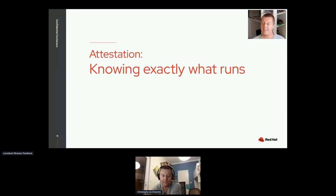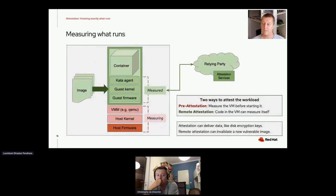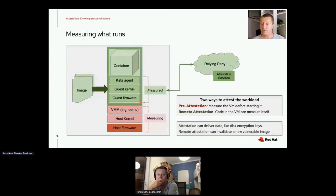Let's talk about attestation — the process that lets the owner, the tenant, know that what is running inside the guest is exactly what is intended to run. The first step is to be able to measure what is running. There are various services provided by the trusted platform at all levels, but typically you have hardware registers in the CPU that can be accessed to measure specific memory ranges. What is measured depends on the platform and what you want to do, but you would typically measure the initial boot image — including the firmware, the guest kernel, the agent, and so on. The container is a varying part, so we will attest that separately.